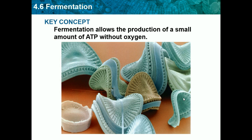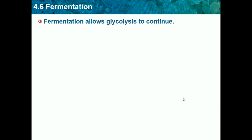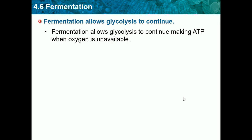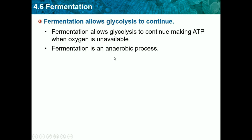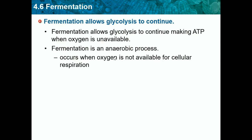This will be the last lesson of this chapter and it's a very simple, quick and easy lesson. Our key concept for today is that fermentation allows the production of a small amount of ATP without oxygen. Fermentation allows glycolysis to continue, and it is an anaerobic process, so it does not require oxygen — it occurs when oxygen is not available for cellular respiration.